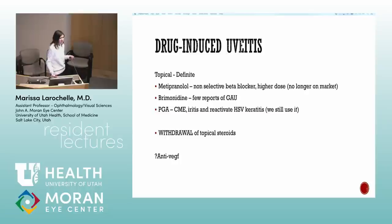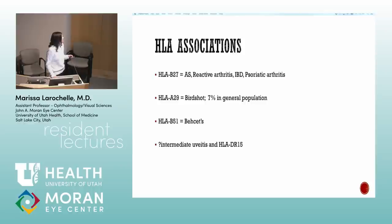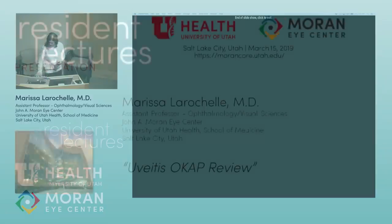Reports of intravitreal anti-VEGF injections causing sterile inflammatory responses resembling uveitis exist. HLA associations summary: B27 and A29 are found in about 7-8% of the general population, so we don't screen everyone — only in the right clinical scenario. Intermediate uveitis is associated with DR15.